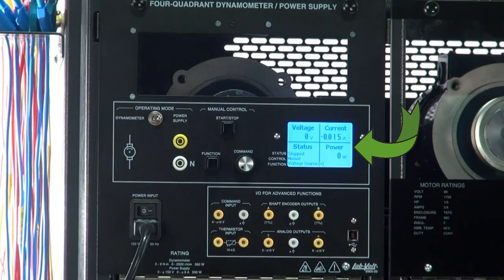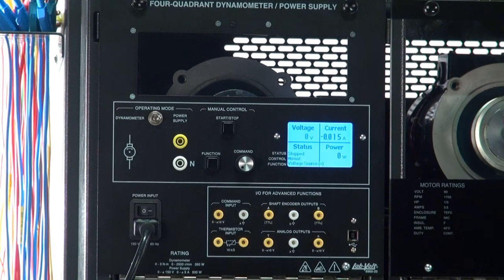The screen here now displays values corresponding to a power supply instead of a dynamometer. In fact, speed becomes voltage and torque becomes current.